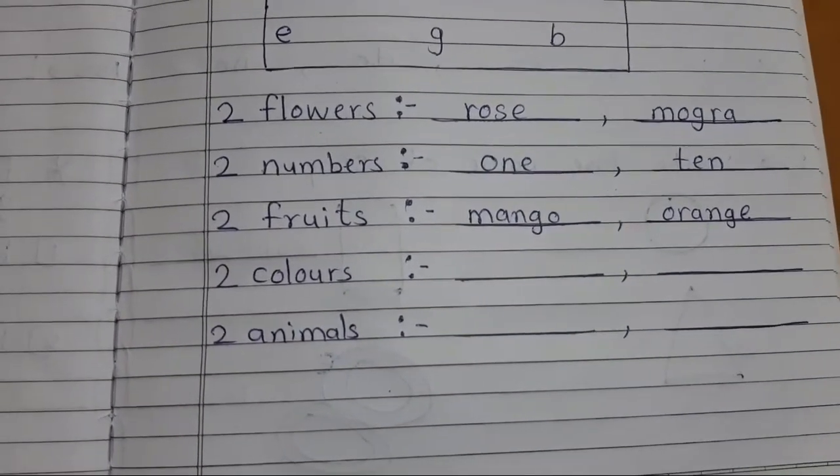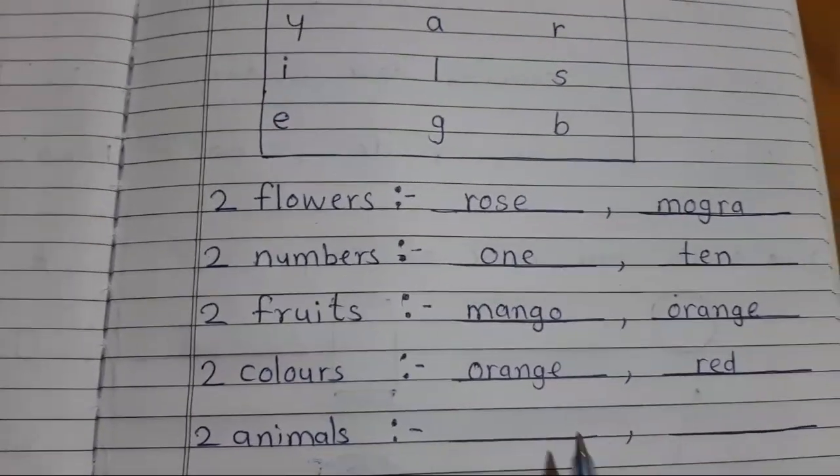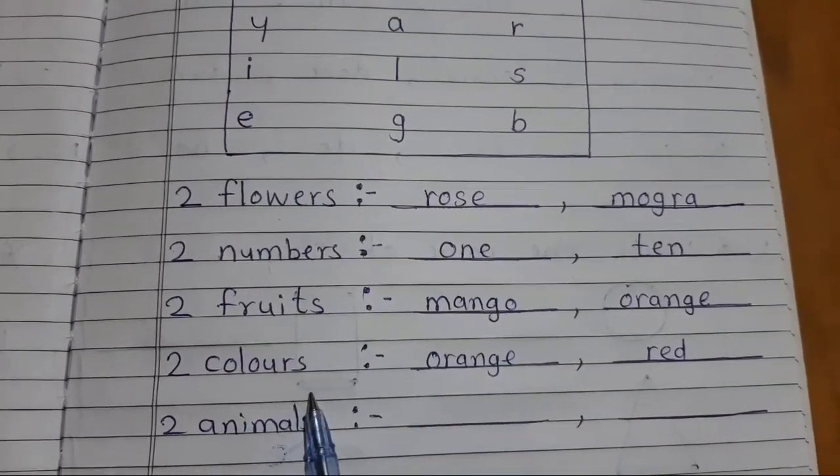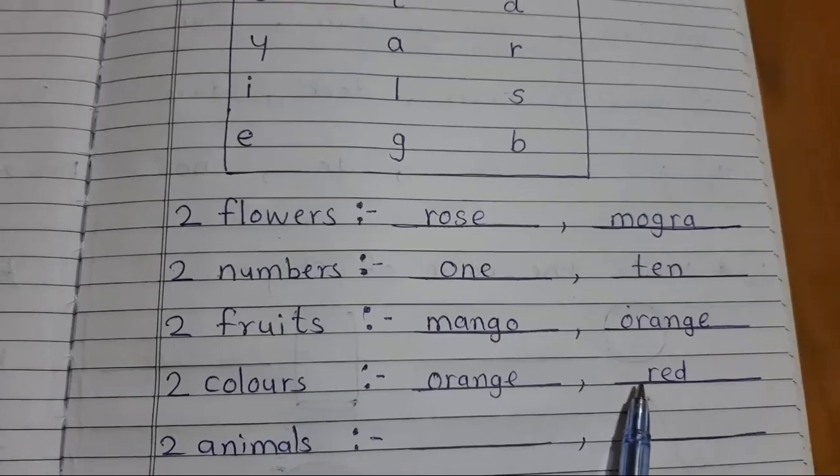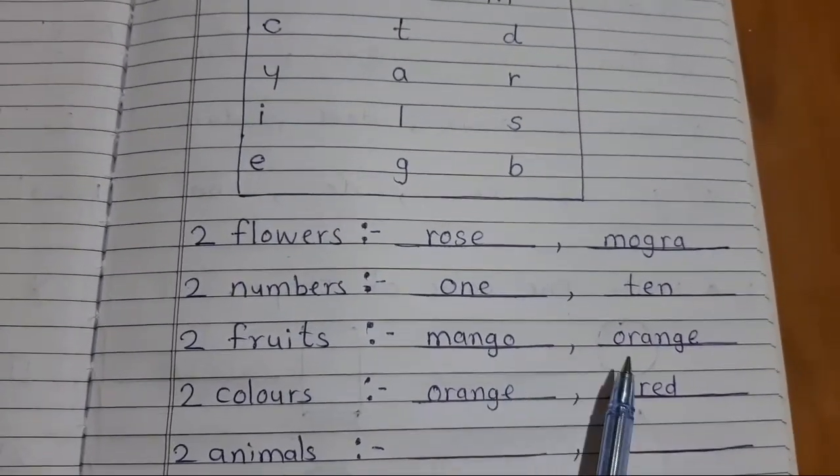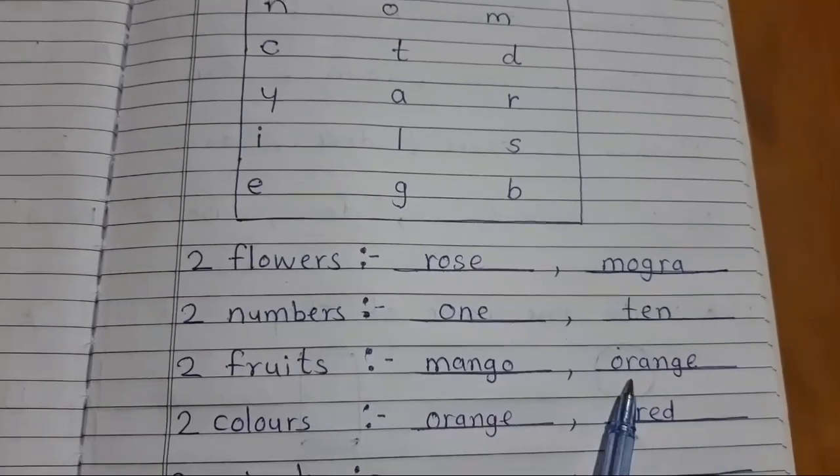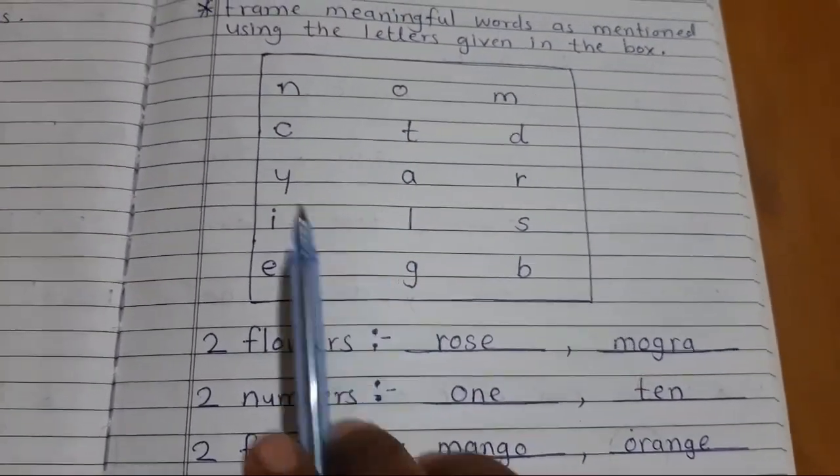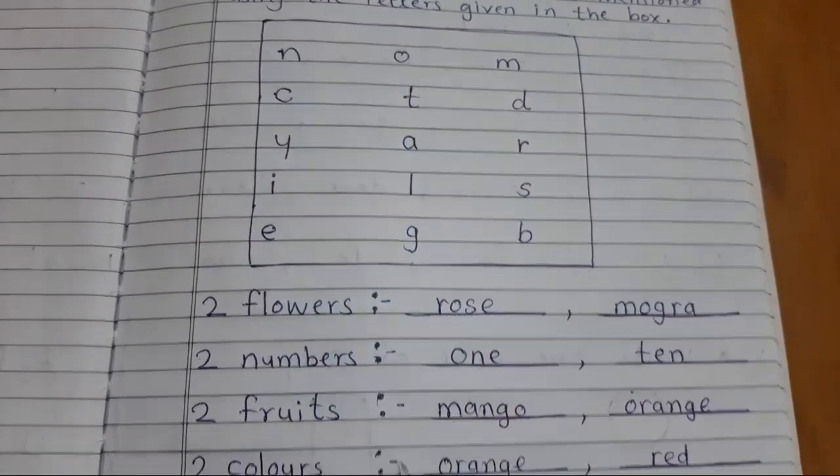Now you have to write two colors name. See. Two colors name. Orange color and red color. So to write the name of fruit I use orange and I show you how I use to write orange.